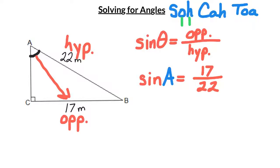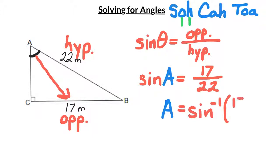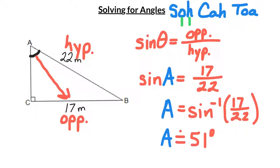The sine of angle A is 17 over 22, but I want just the angle. So that means I'm going to have to do something called the inverse sine. I'm going to take the inverse sine of 17 over 22, and when I plug that into my calculator, I get an answer of approximately 51 degrees.